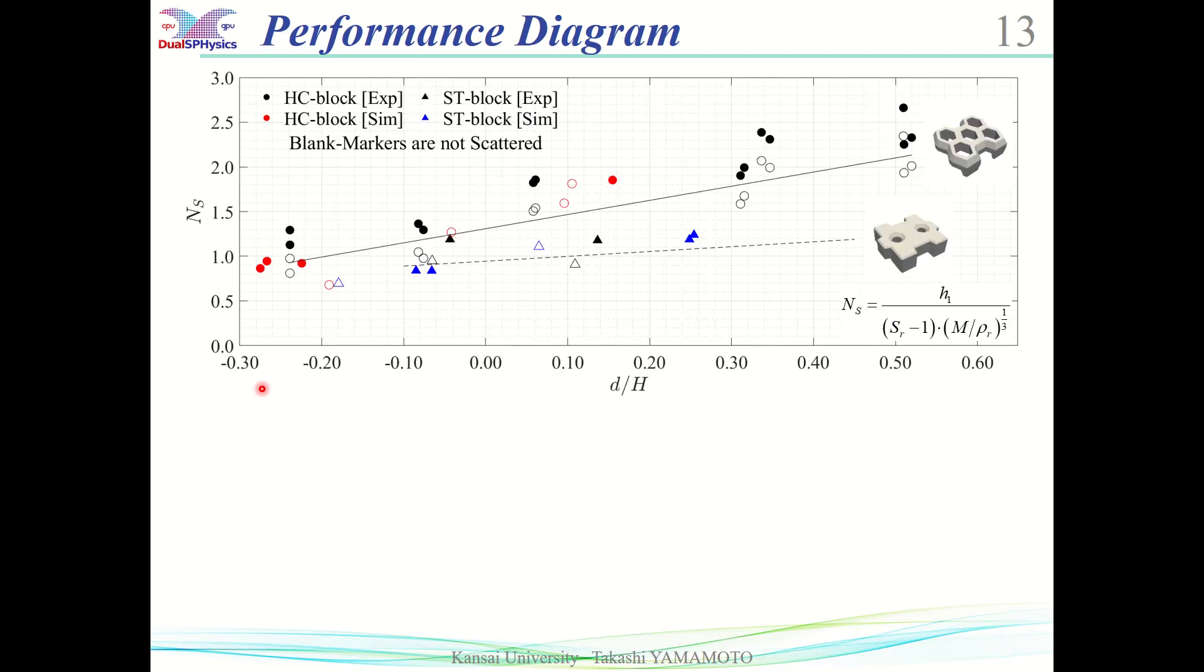Here is the performance diagram. Black circles indicate the experimental value of HC. Black triangles indicate the experimental values of ST. Red circles indicate the simulation values of HC. And blue circles indicate the simulation values of ST.